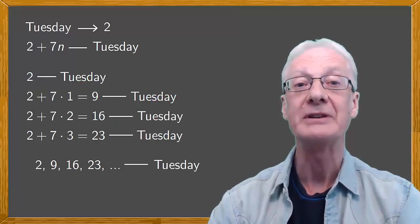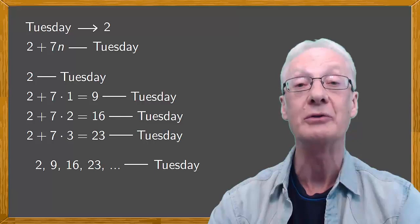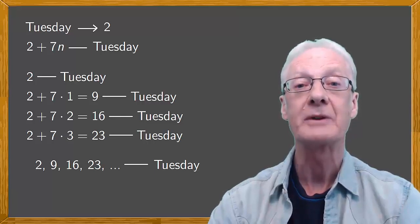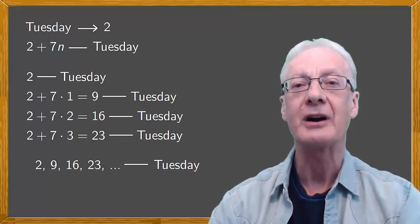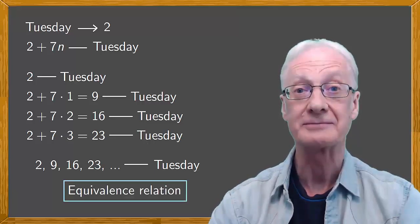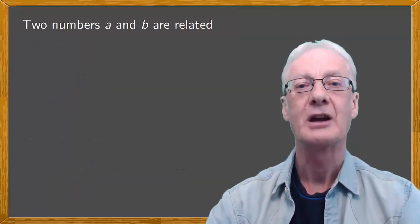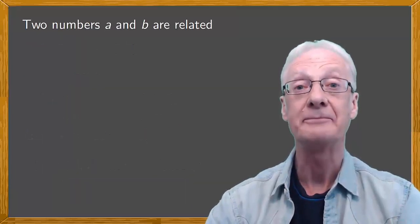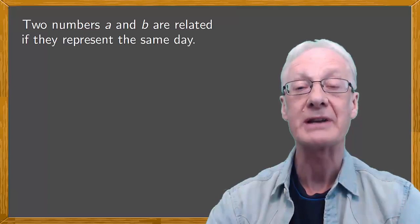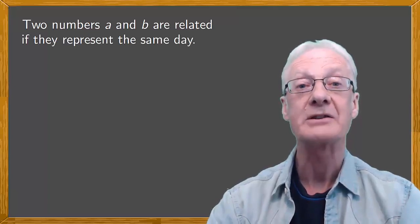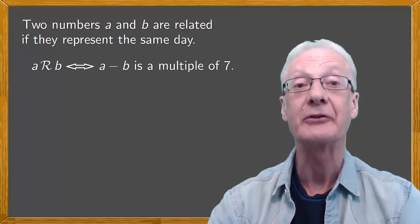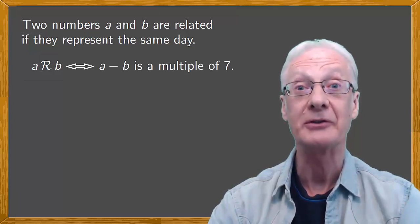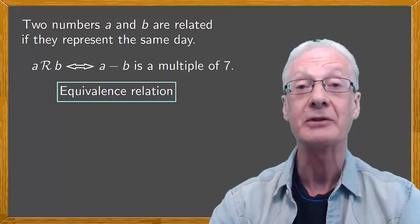Because there are seven days of the week, we say that we're doing calculations modulo seven. Have you noticed something here? Behind all this are the equivalence relations. Two numbers A and B are related if they represent the same day. This happens, as you can see, when subtracting them gives a number that's a multiple of seven. This is an equivalence relation.